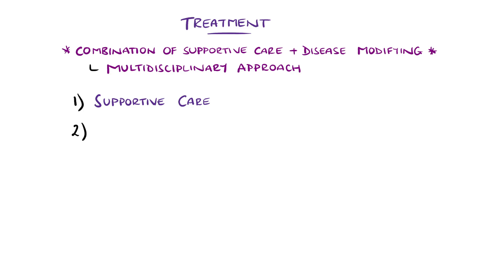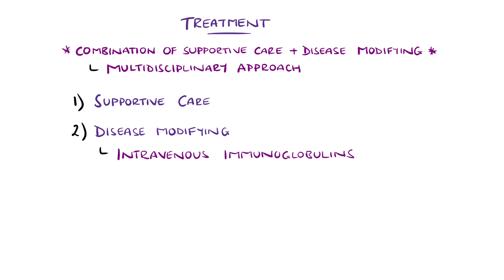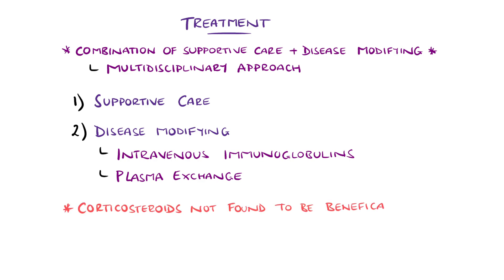Disease-modifying medication focuses on immunotherapy, with intravenous immunoglobulins or plasma exchange being the main two options. Intravenous immunoglobulins are more commonly used, as plasma exchange requires a central line. Corticosteroids have not been found to be beneficial and may actually worsen outcomes.